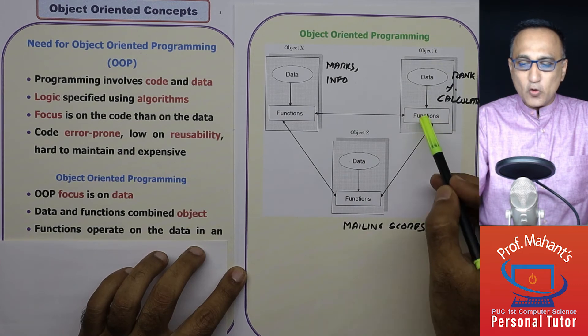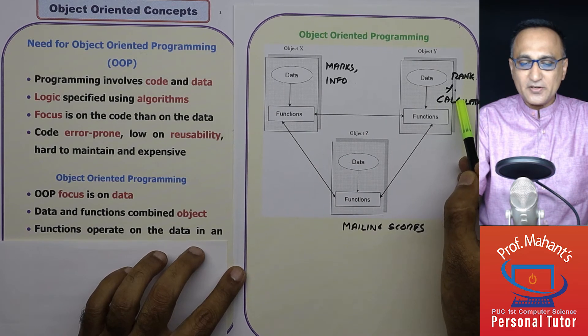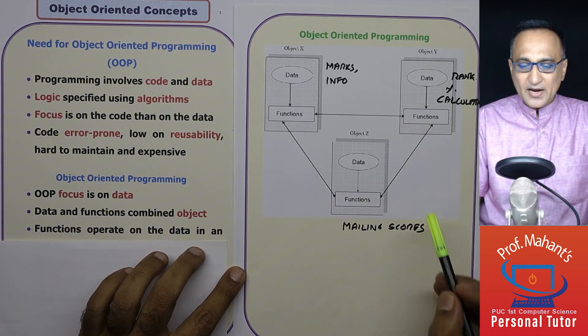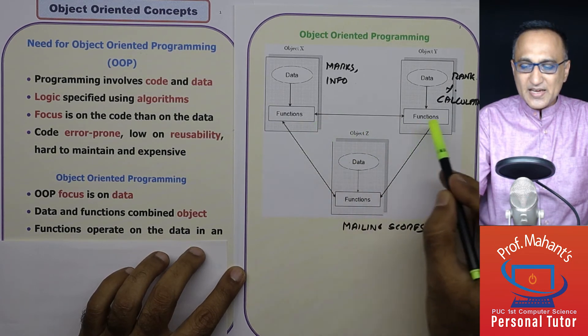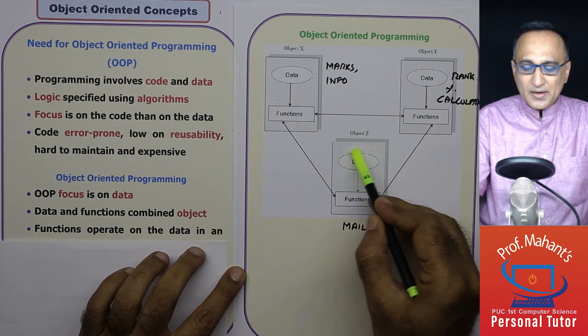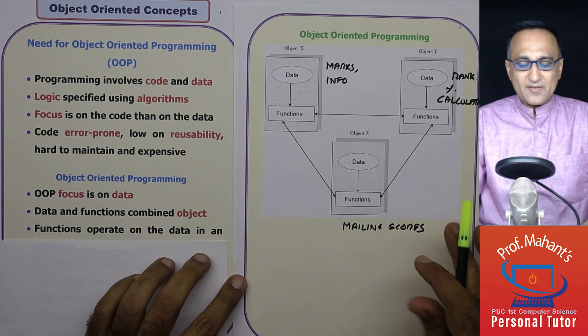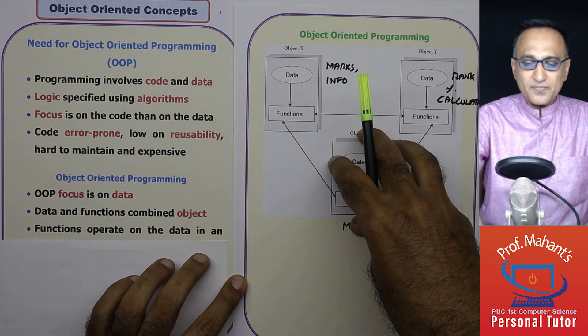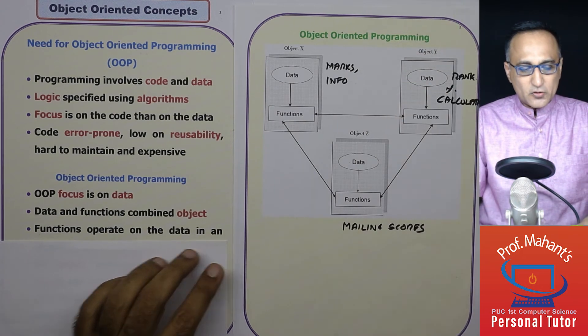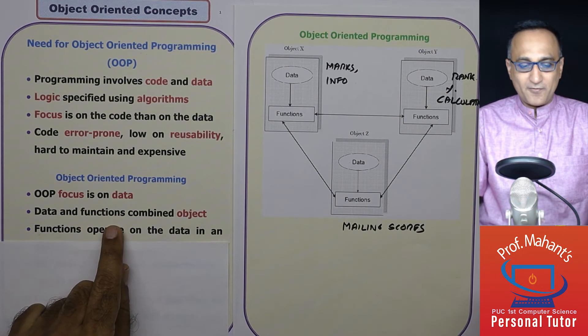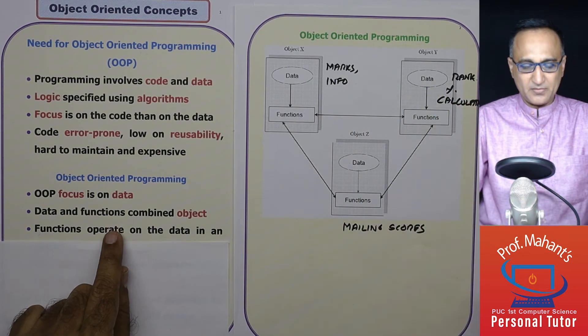In the second group, I have code which uses data from here and calculates the rank and percentage of each student. And finally, I have a third group which uses the data of maybe this as well as this to mail the scores or the ranks of students to their parents. So what I have is I have three groups here, each group has its own code and data. So this grouping of data and code or functions is called an object. This is one object, second object and third object.